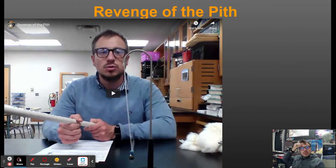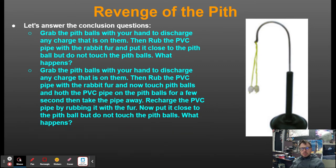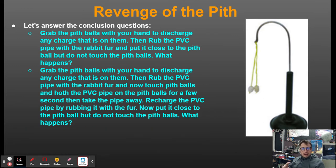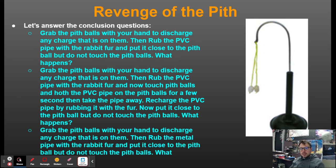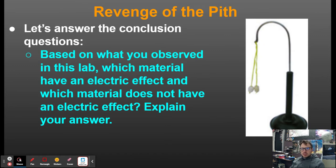The 'revenge of the pit' lab involves taking a PVC pipe and a metal rod and placing them close to pit balls after rubbing them with fur. Rubbing the PVC pipe causes it to deflect the balls. After discharging the balls and then touching them with the PVC pipe, they deflect and repel each other. Nothing happens with the metal rod. Based on observations, the PVC has the electric effect because it made the pit balls move, while the metal did not.